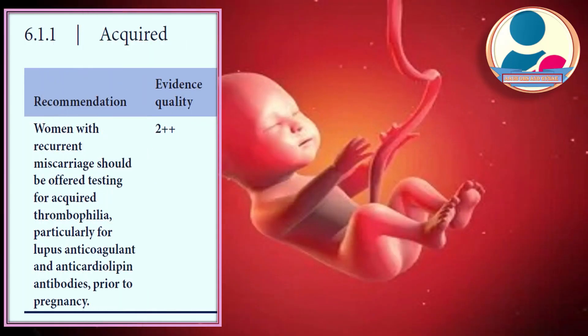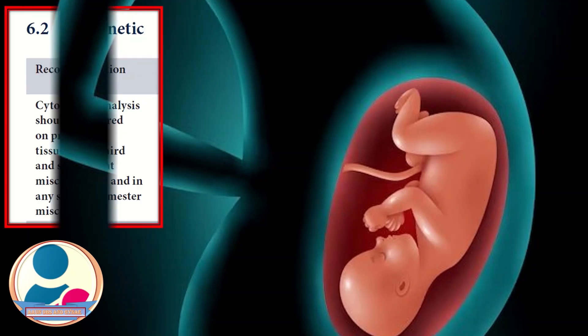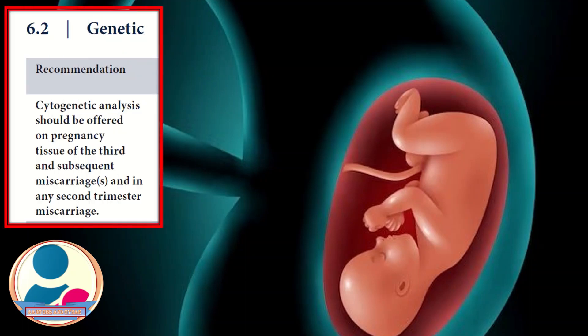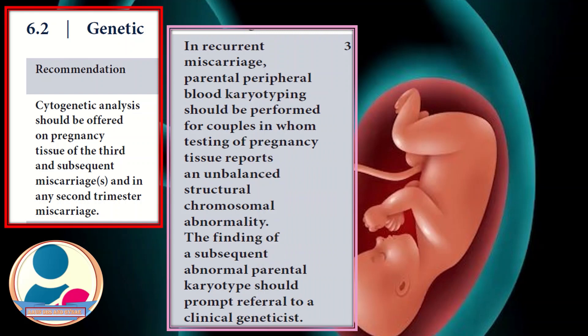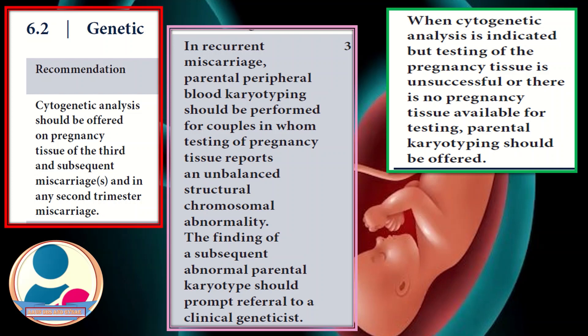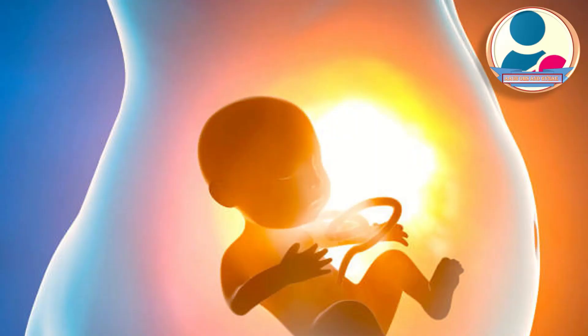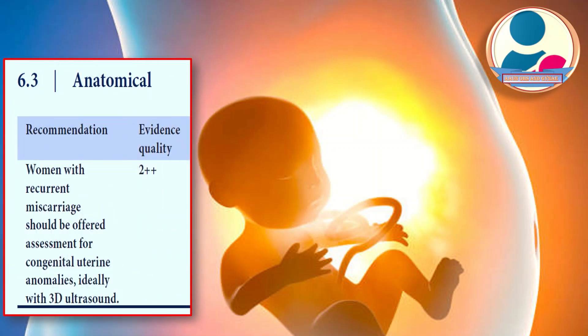Women with recurrent miscarriages should be offered testing for acquired thrombophilia, particularly lupus anticoagulant and anticardiolipin antibodies, prior to pregnancy. Cytogenetic analysis should be offered on pregnancy tissue of third and subsequent miscarriages and any second trimester miscarriages. Parental peripheral blood karyotype should be performed where pregnancy tissue reports an unbalanced structural chromosomal abnormality; an abnormal parental karyotype finding should prompt referral to a clinical geneticist. Where tissue testing is unsuccessful or unavailable, parental karyotype should be offered.